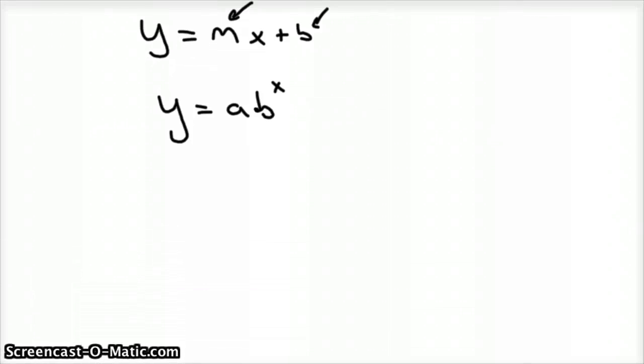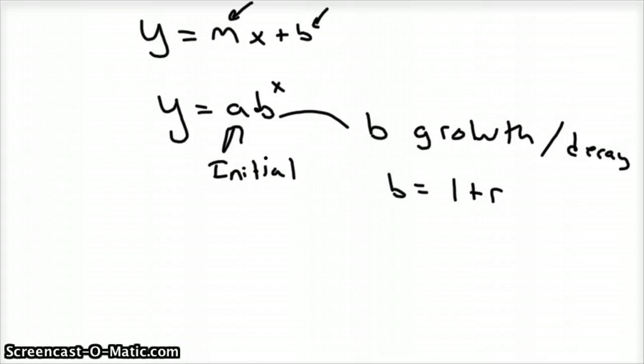So a stands for your initial amount of something, and b stands for growth or decay. So b could be 1 plus your rate of growth for growth, or b could be 1 minus your rate of growth for decay. I'm not going to give examples of this because I'm assuming if you're studying Euler numbers, you kind of got a handle on that as well. But it's kind of neat to see how it all connects together.